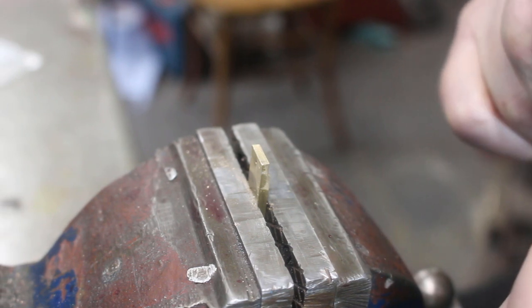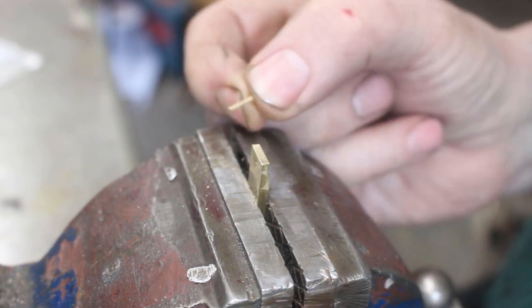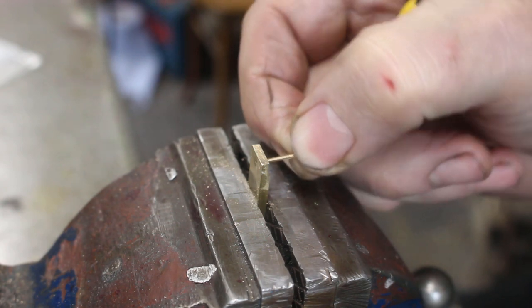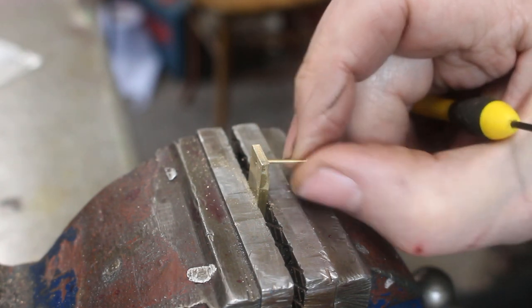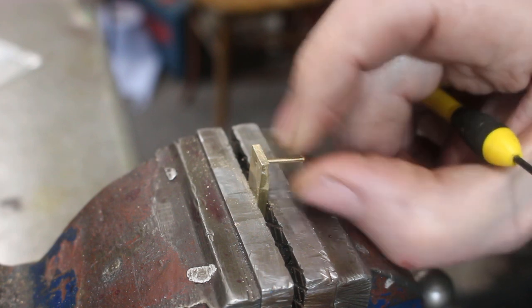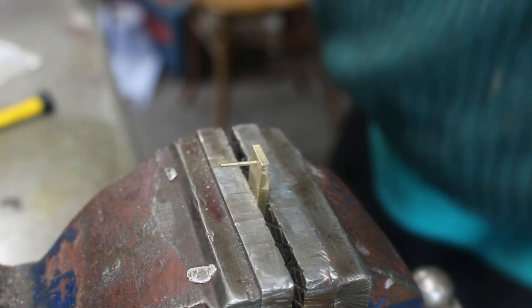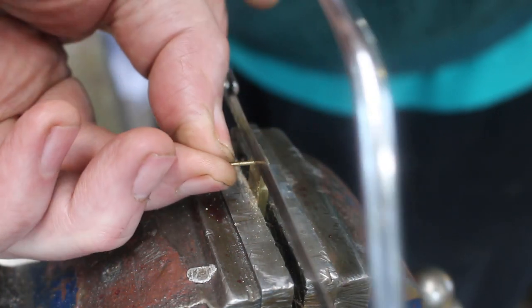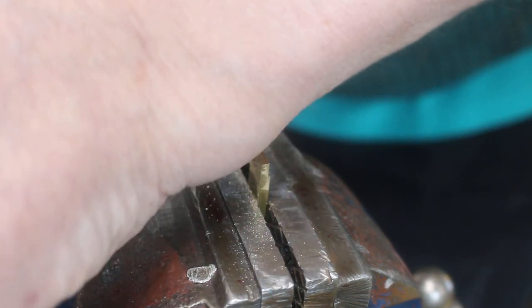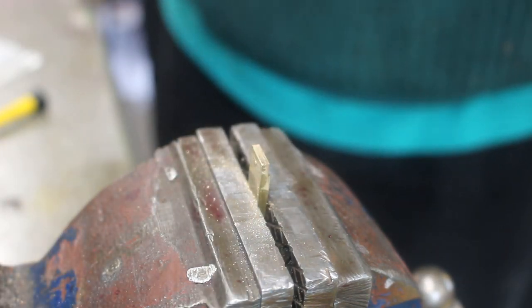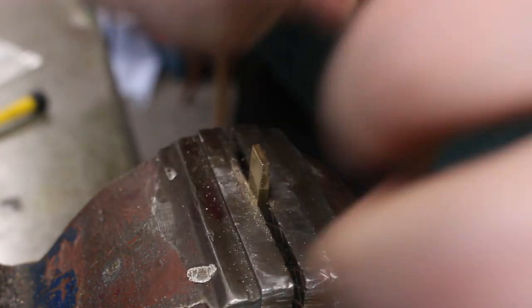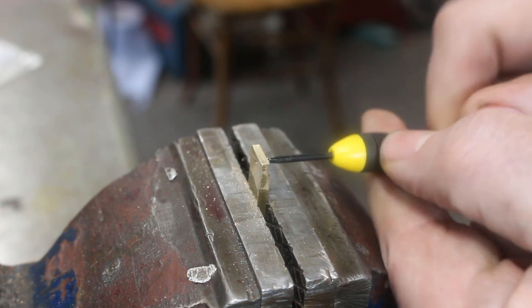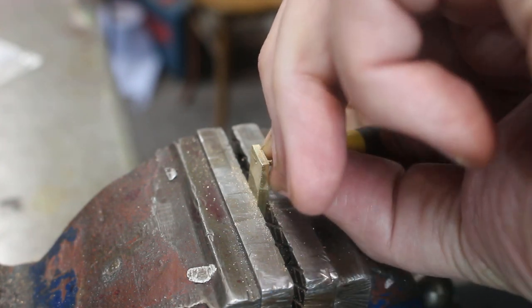So we need some little 12 BA screws to fix on the axle box covers. So I've got some quite long ones here. So I'm just making these 2.5mm long. So I've made up a little jig and I'll screw these in too. So that's about a 12 BA studding for some future job. I'll try not to lose it.